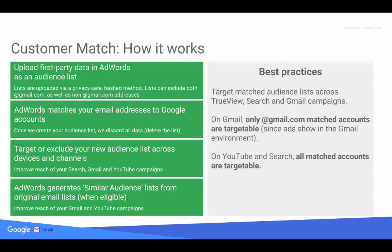Customer match works for various Google AdWords solutions. For Gmail, first you upload first-party data into AdWords as an audience list — you can include both gmail.com and non-gmail.com addresses. AdWords then matches your email addresses to Google accounts, after which you are free to delete the list. You can create campaigns targeting or excluding the new audience lists across devices and channels, covering search, Gmail, and YouTube. AdWords will also generate similar audience lists from the original email list when eligible.